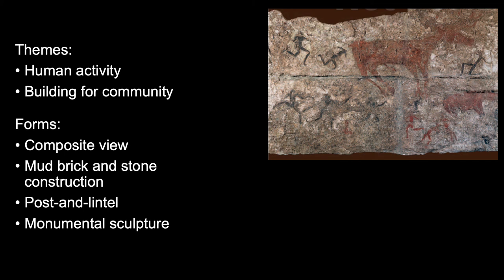Themes in Neolithic art are human activities, building of the community, buildings, architecture for that community, infrastructure for the architecture, and safety measures. We see art take on new forms — they use composite view, mud brick and stone construction is the common building technique, a new building technique called post and lintel emerges, and monumental sculpture becomes an important part of Neolithic art.